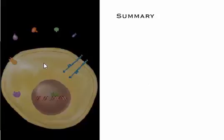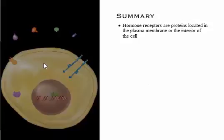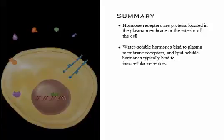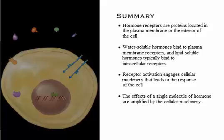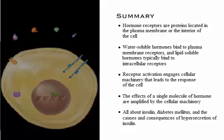Here's a summary of what we've covered. Hormone receptors are proteins located in the plasma membrane or the interior of the cell. Water-soluble hormones bind to plasma membrane receptors, and lipid-soluble hormones typically bind to intracellular receptors. Receptor activation engages cellular machinery that leads to the response of the cell, and the effects of a single molecule of hormone are amplified by the cellular machinery. Topics covered include insulin, diabetes mellitus, and the causes and consequences of hyper-secretion of insulin.